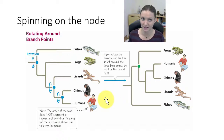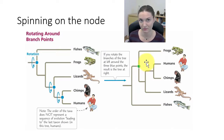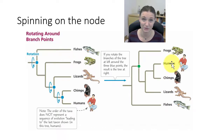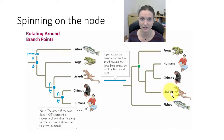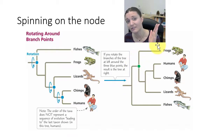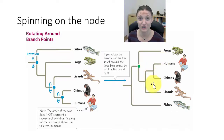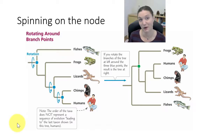Another common confusion: if you ask who is more closely related to a frog — lizards or humans? The answer is they're equally related, because the common ancestor of humans, chimps, and lizards with frogs is the same node. Similarly, frogs and lizards are equally related to fish, because their common ancestor with fish is the same branch point. It's all about the branching pattern, not the order of taxa on the tree. In the next video, we'll jump into how to actually build a phylogeny.